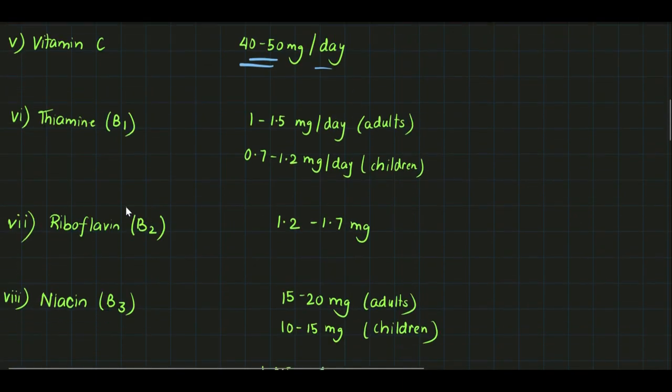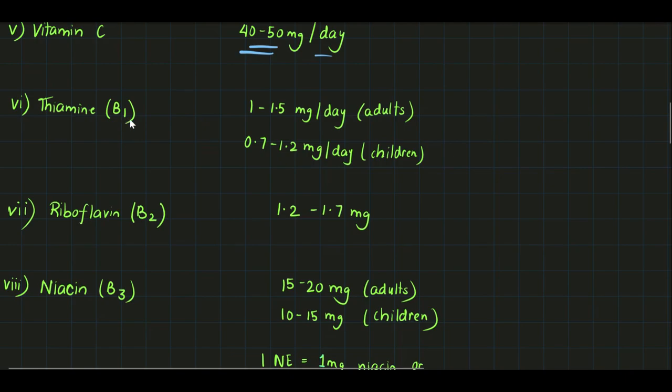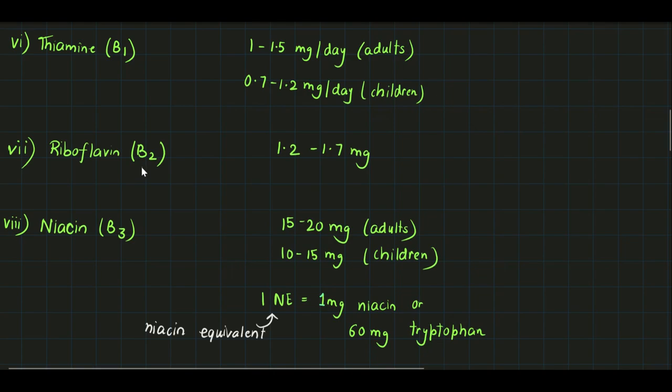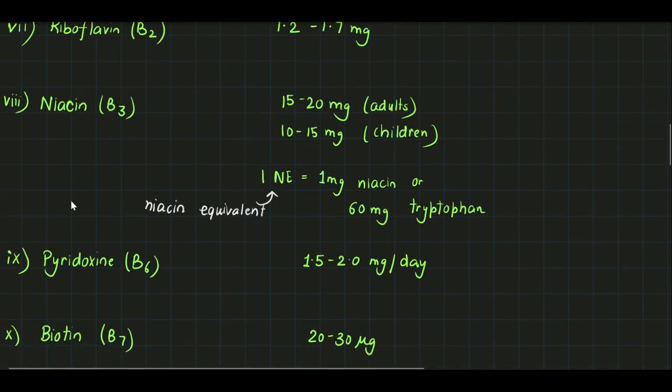For thiamine, that is vitamin B1, it is 1 to 1.5 milligrams per day for adults, whereas 0.7 to 1.2 milligrams per day for children. For riboflavin B2, it is 1.2 to 1.7 milligrams per day.